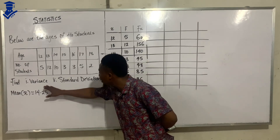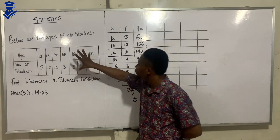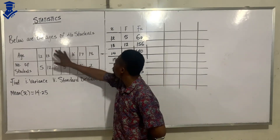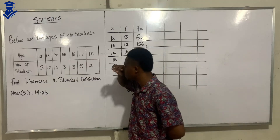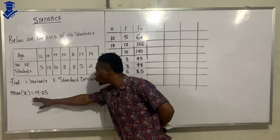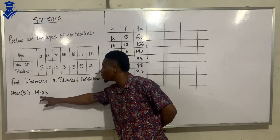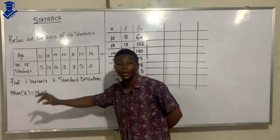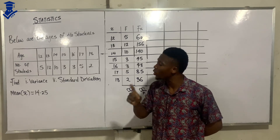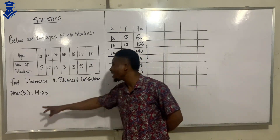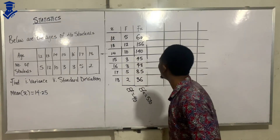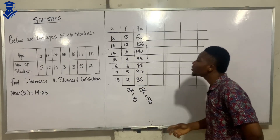We want to find the variance and the standard deviation from the data given to us. Below are the ages of 40 students. We want to find the variance and standard deviation, and we've already gotten the mean, which is 14.25. Before you can find your standard deviation or variance, you have to get your mean first.